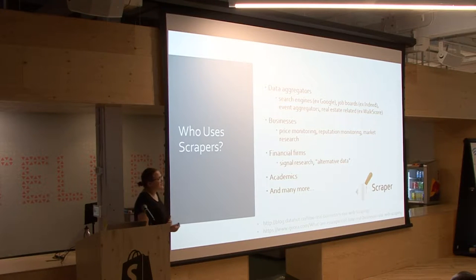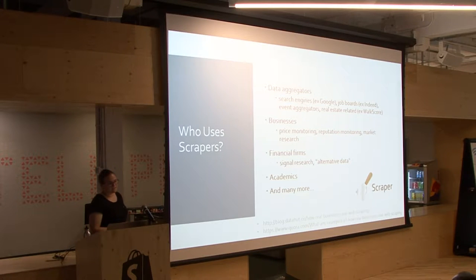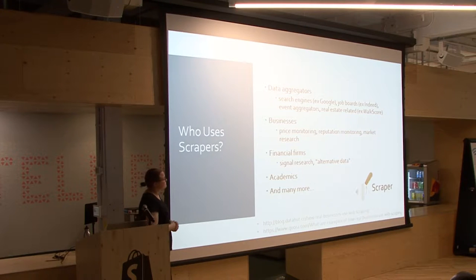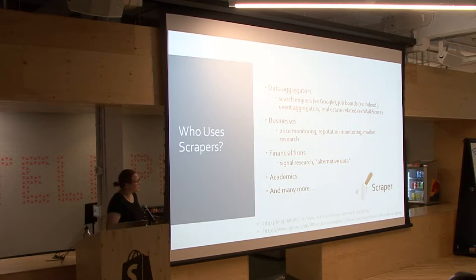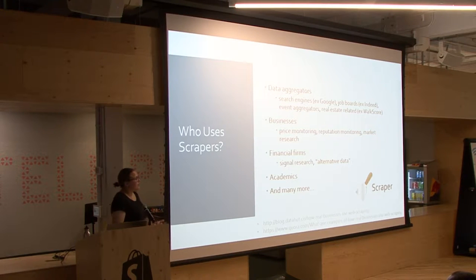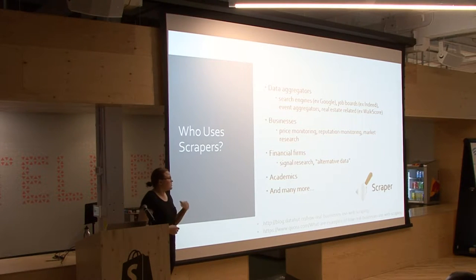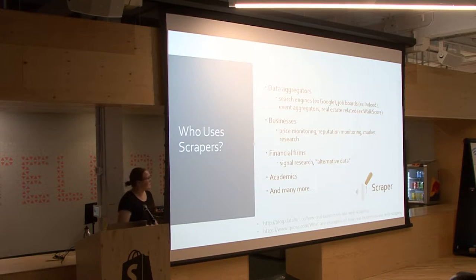People who use web scrapers include a lot of data aggregators - prime examples are listings like Airbnb, job boards, event aggregators, and real estate companies. Various businesses build internal scrapers for price monitoring, reputation monitoring, and market research. A lot of financial firms use web scraping - it's called signal research or alternative data. Academics use this as well.